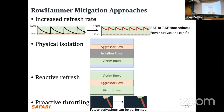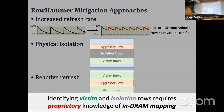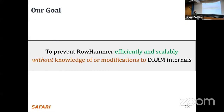Looking at the four mitigation approaches, physical isolation and reactive refresh intrinsically need to identify victim or isolation rows, which requires proprietary knowledge of DRAM internals that we do not have access to. Our goal in this work is to prevent Rowhammer efficiently and scalably without knowledge of or modifications to DRAM internals.